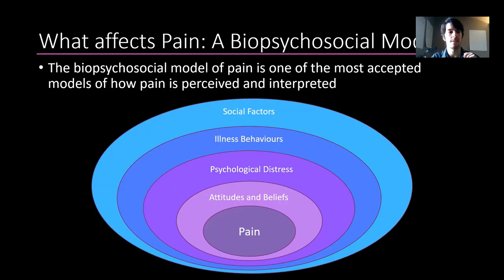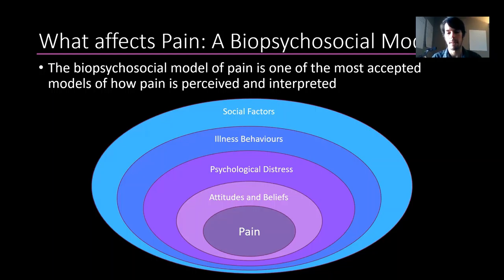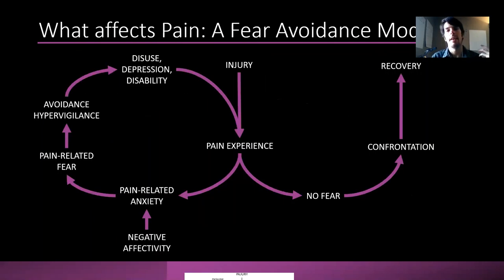Illness behaviors are another component — both within ourselves and around us. These include being really careful with the injured limb, being hyper-aware of its position, and the fear of continuing to damage it. Social factors also play a role — what other people perceive of your pain — such as concerned family members telling you not to move, recommendations for bed rest, or practitioners telling you a joint is completely destroyed. Those type of narratives impact your illness behaviors, create psychological distress, impact your attitudes about recovery, and facilitate your pain.